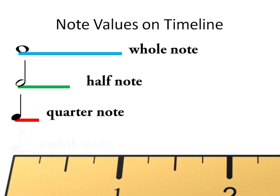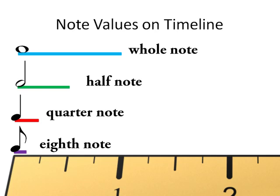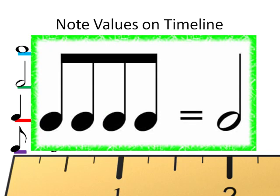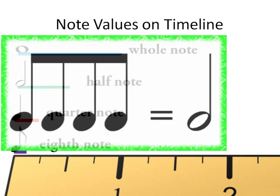On a timeline, eighth notes are half the duration of a quarter note. As was the case in the Note Values video, it is helpful to know various duration equivalents. For example, four eighth notes has the same duration as a half note.